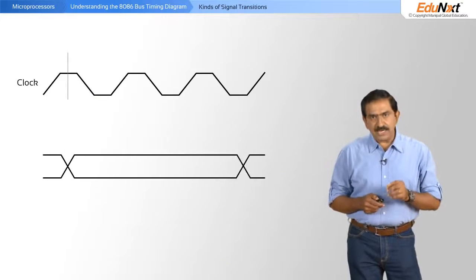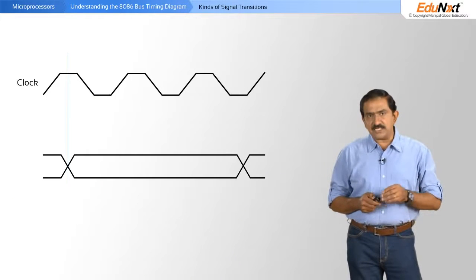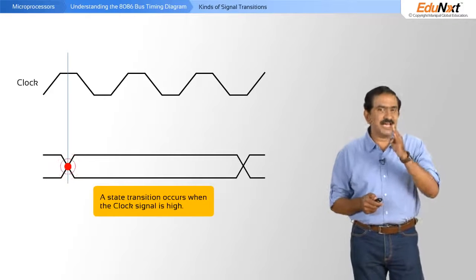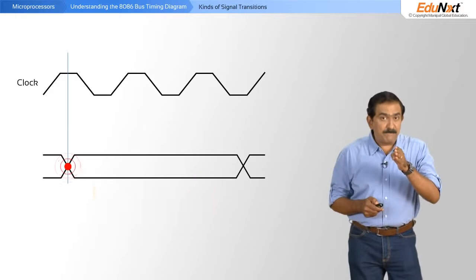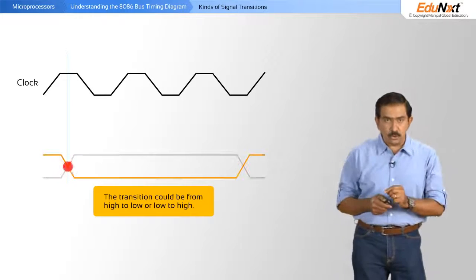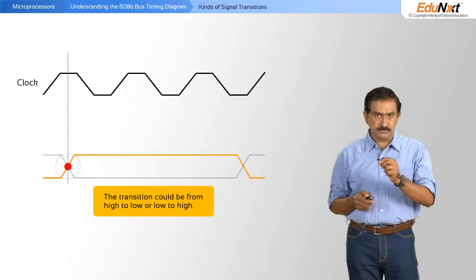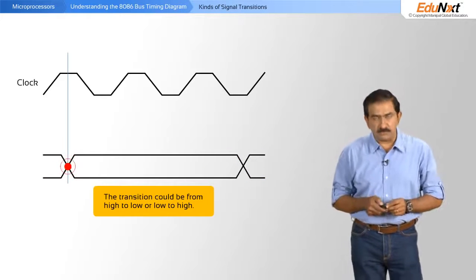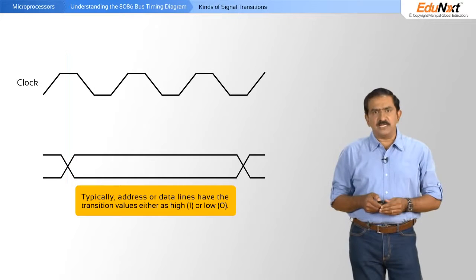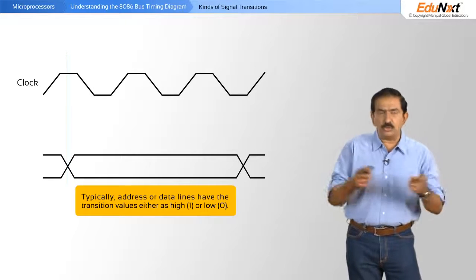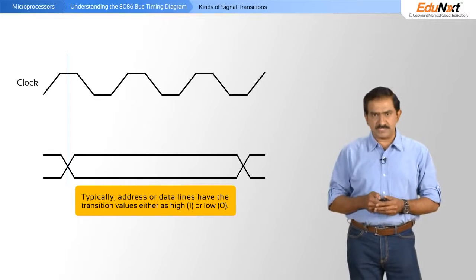In this example, a state transition occurs when the clock signal is high, but the transition could be from a high to a low or a low to a high — that's the meaning of this particular signal. This is typical of address lines and data lines where every time you could have a high or a low on those two kinds of buses.